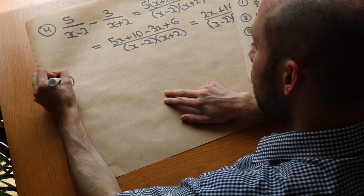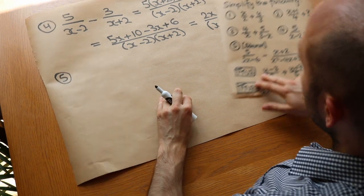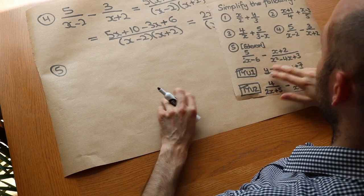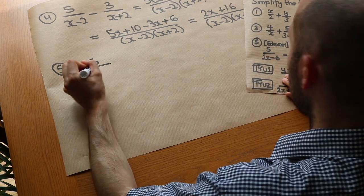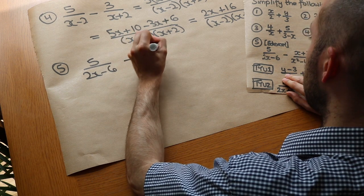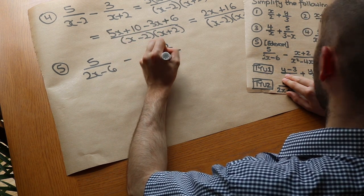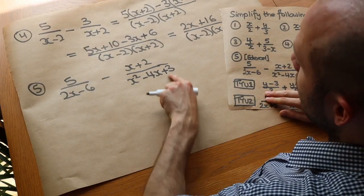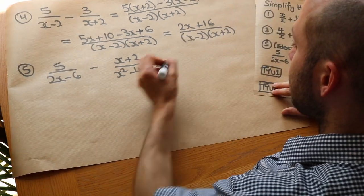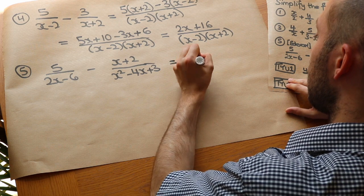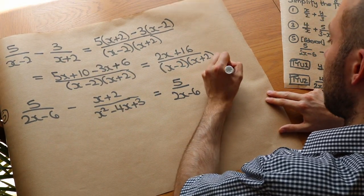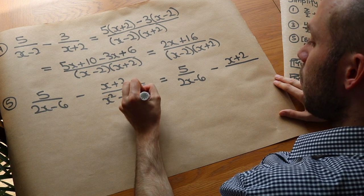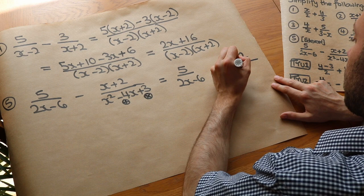Now question 5 — this one is hard. I've never seen it in a normal Edexcel GCSE paper, but it has appeared in an IGCSE paper and in the AQA IGCSE Further Maths qualification. We've got 5 over (2x−6) minus (x+2) over (x²−4x+3). We do this quite differently — firstly we need to factorise anything we can. The quadratic x²−4x+3 factorises as (x−3)(x−1), using two numbers that add to −4 and multiply to give 3, which are −3 and −1.